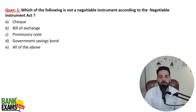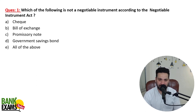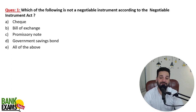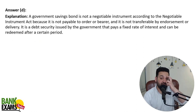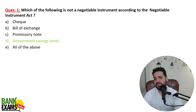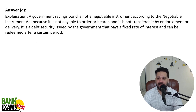Which of the following is NOT a negotiable instrument according to the Negotiable Instruments Act? Check, bill of exchange, and promissory notes — all of them are negotiable instruments. But government savings bonds are not negotiable instruments because they are not transferable. According to the Act, cheque, bill of exchange, and promissory note are the three negotiable instruments. So D is the correct answer.